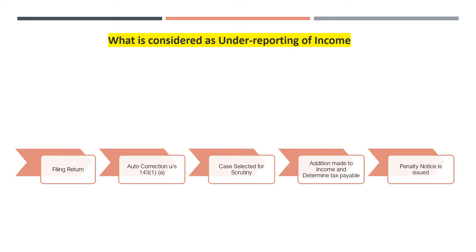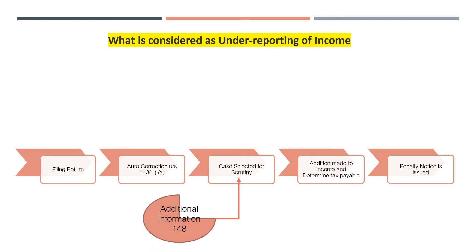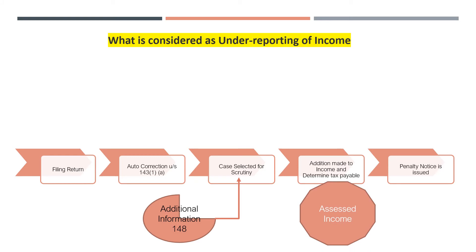Subsequently, the case may be selected for scrutiny. This scrutiny selection can be done on a random basis, on particular criteria, or subsequent to any additional information available under section 148. Once a case is selected for scrutiny, notice is sent to the assessee, who from time to time responds to various queries raised by the officer. Once all responses are submitted, the officer decides whether any addition has to be made to the income, and if so, passes an assessment order determining the assessed income and the tax payable.